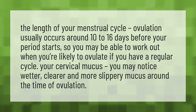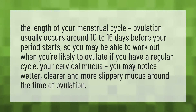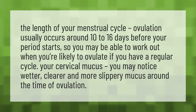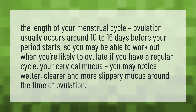The length of your menstrual cycle: ovulation usually occurs around 10 to 16 days before your period starts, so you may be able to work out when you're likely to ovulate if you have a regular cycle. Your cervical mucus — you may notice wetter, clearer and more slippery mucus around the time of ovulation.